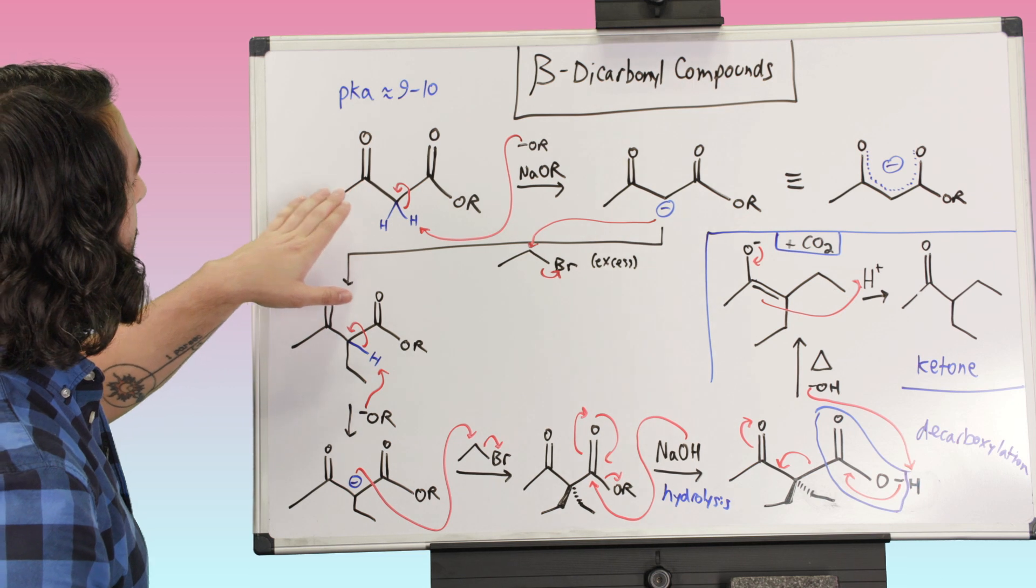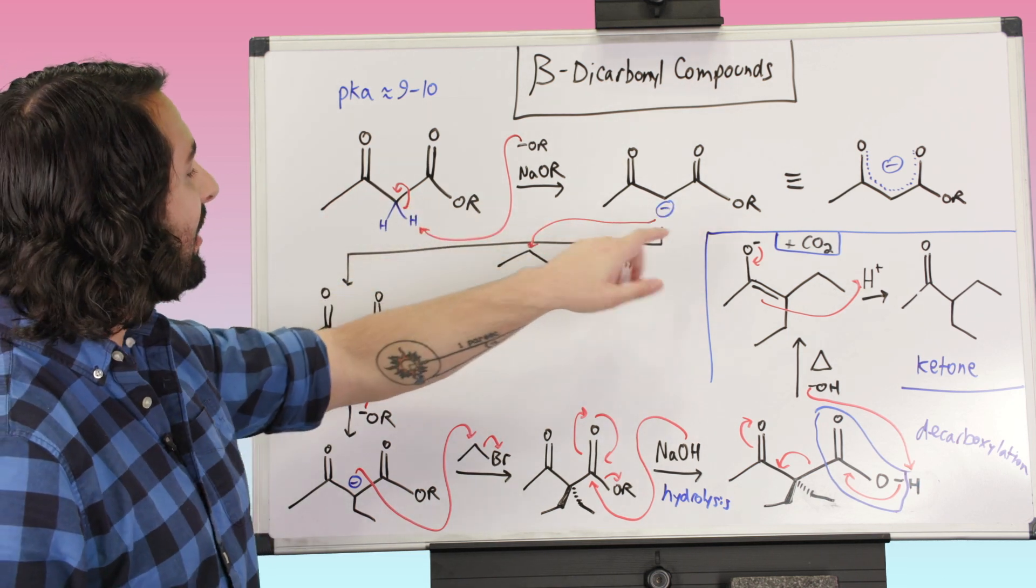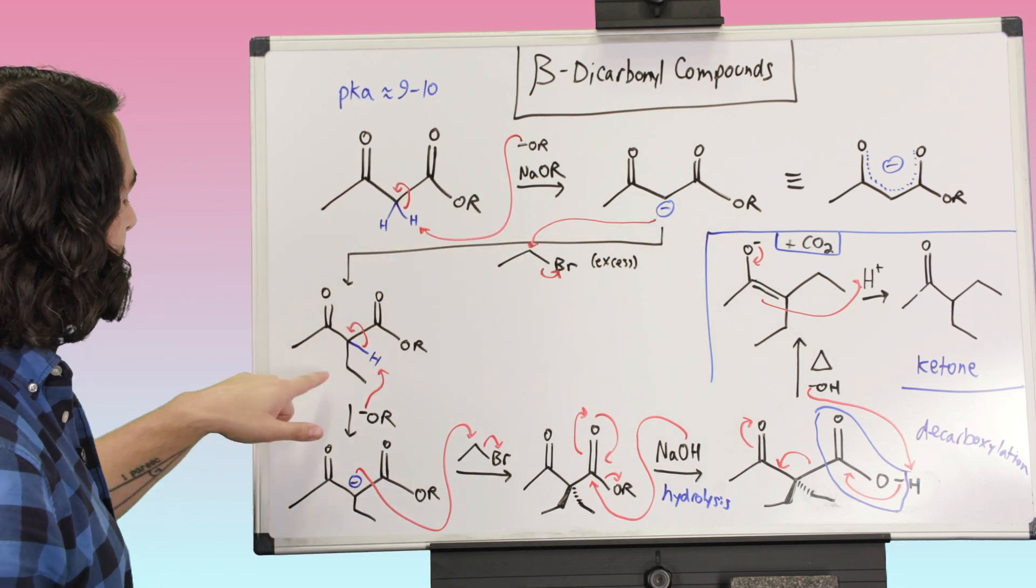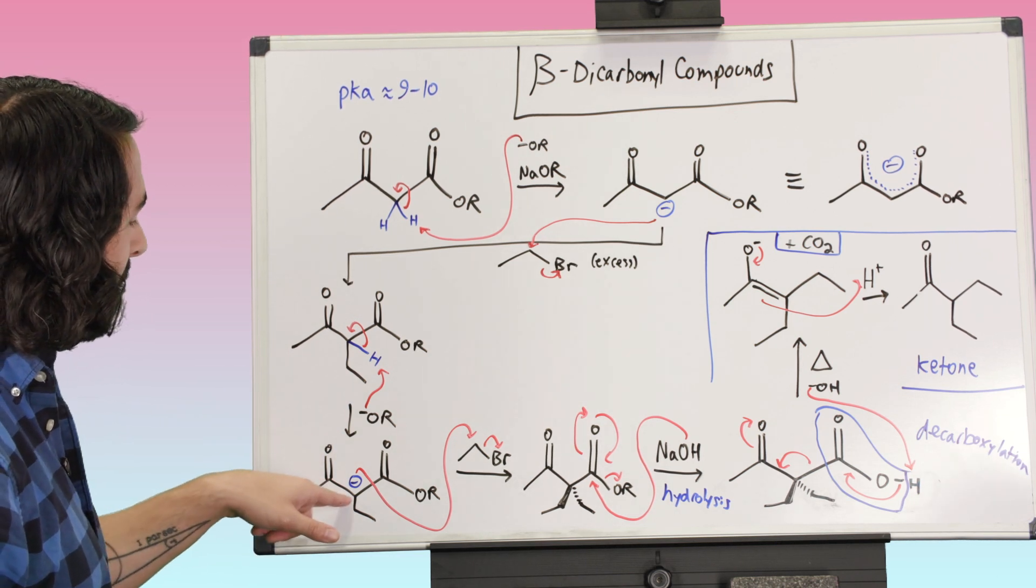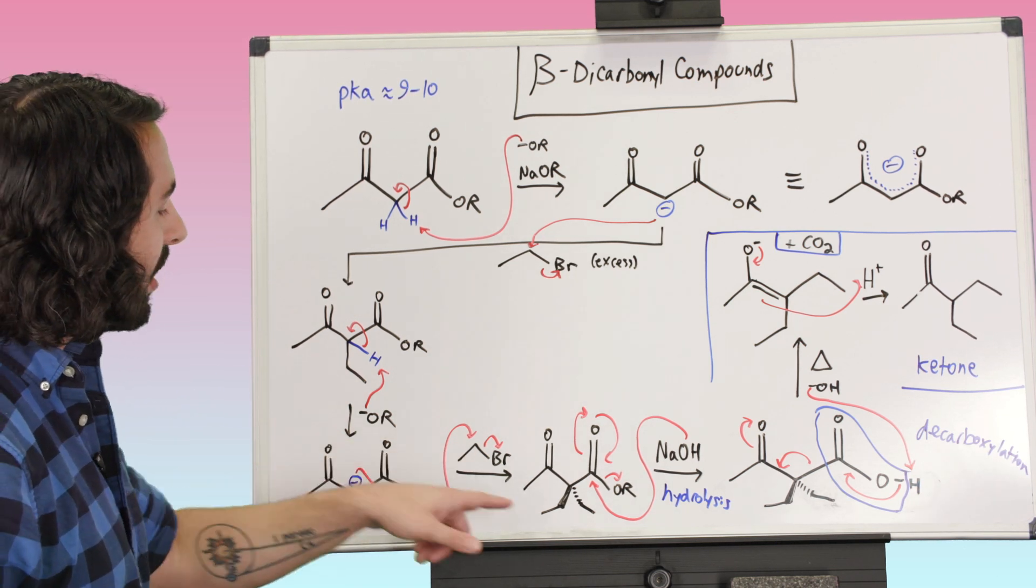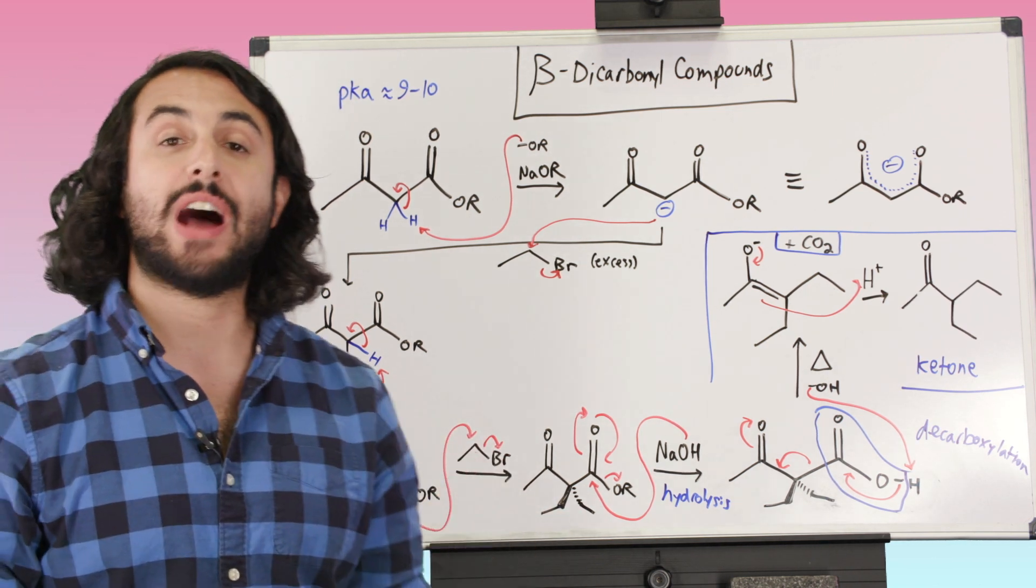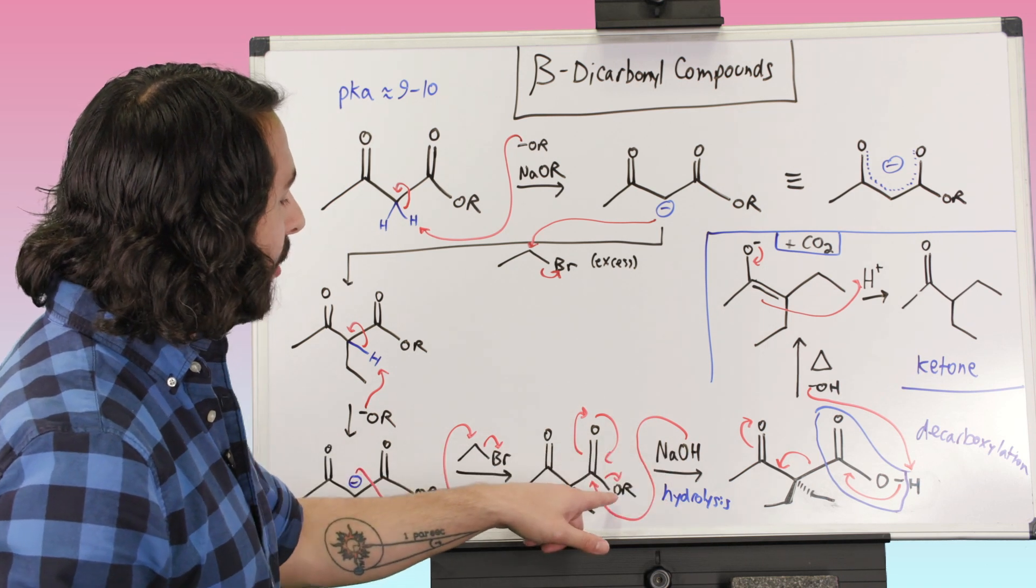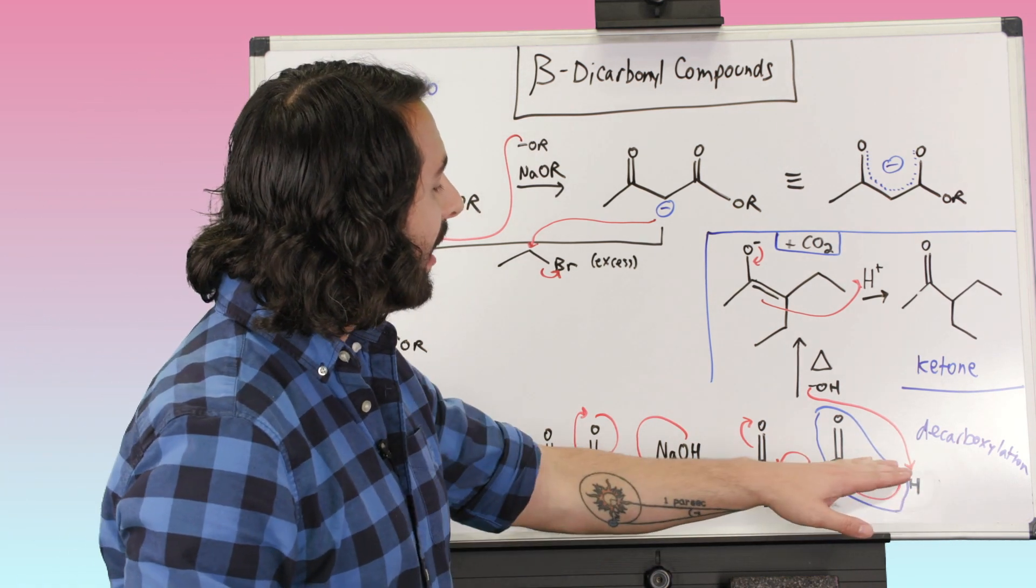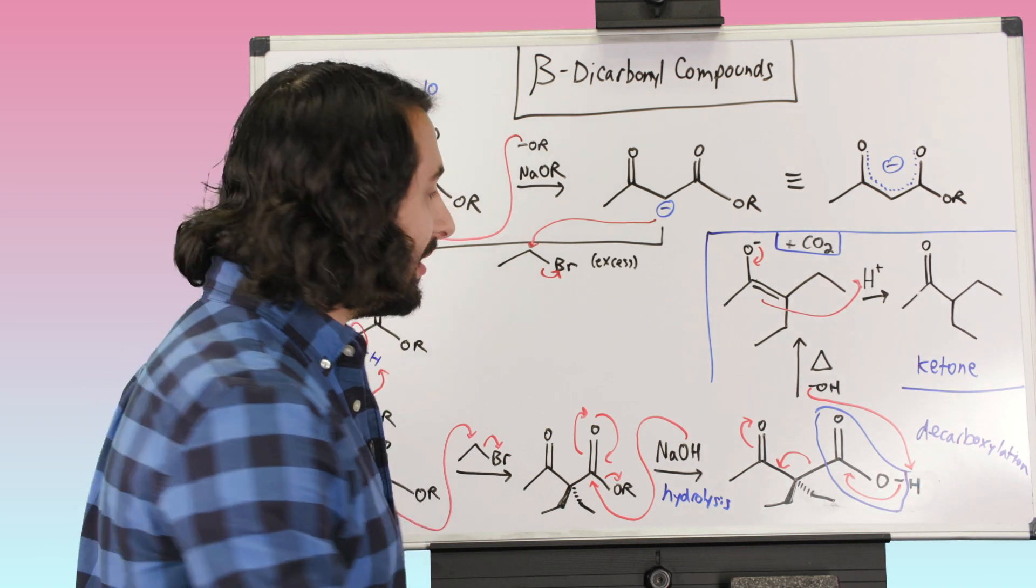All we did was we made the enolate and then did an SN2 to attach an ethyl group right there, and then we did it again. We got the enolate and we attached another ethyl group right there, and then following that we did hydrolysis. The OH replaced the OR, so we've got the OH there. And then we did decarboxylation.